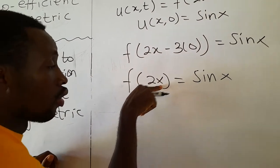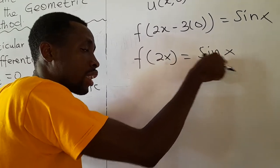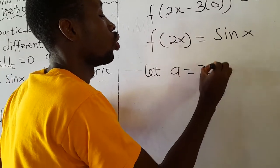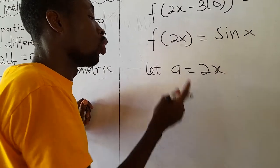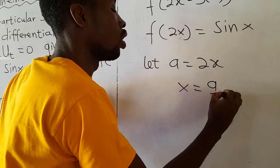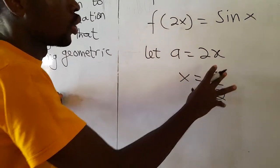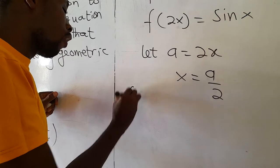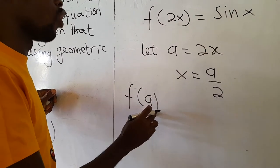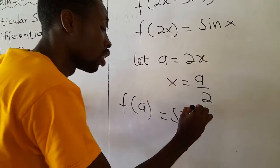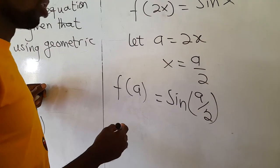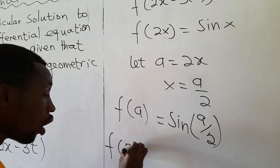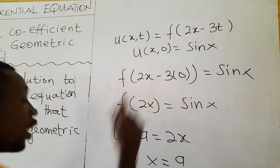Since we do not have a single variable being equated to sin(x), we let a new variable S equal to 2x, so x equals S over 2. Substituting, F of S equals sin(S over 2). Now since we know F of S equals sin(S over 2), we can find F of (2x minus 3t) by replacing S with (2x minus 3t). So F of (2x minus 3t) equals sin of (2x minus 3t) over 2.